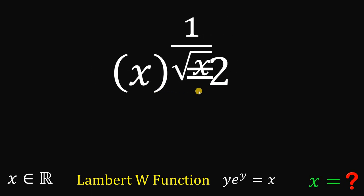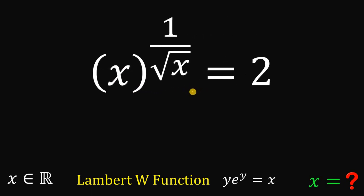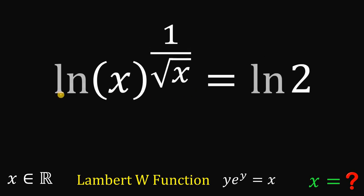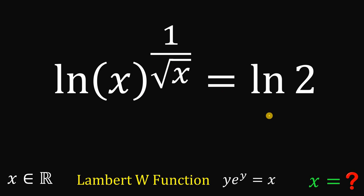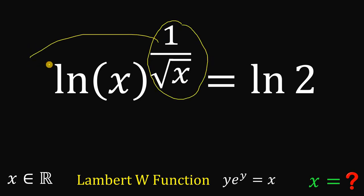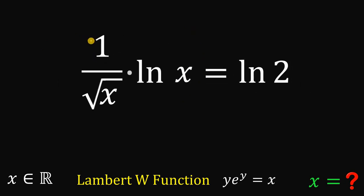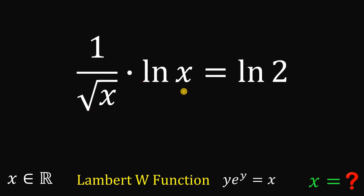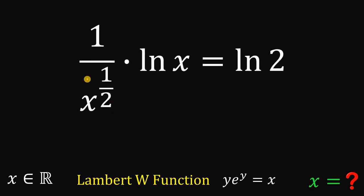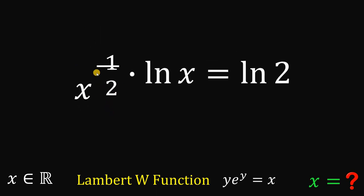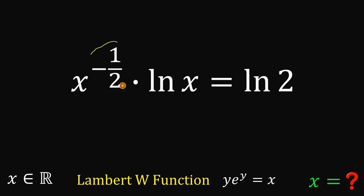Now let's rearrange and take the natural log on both sides. We have ln(x^(1/√x)) = ln(2). Applying log properties, we move the exponent to the front: (1/√x)·ln(x) = ln(2). Since √x = x^(1/2), we can write 1/√x as x^(−1/2).